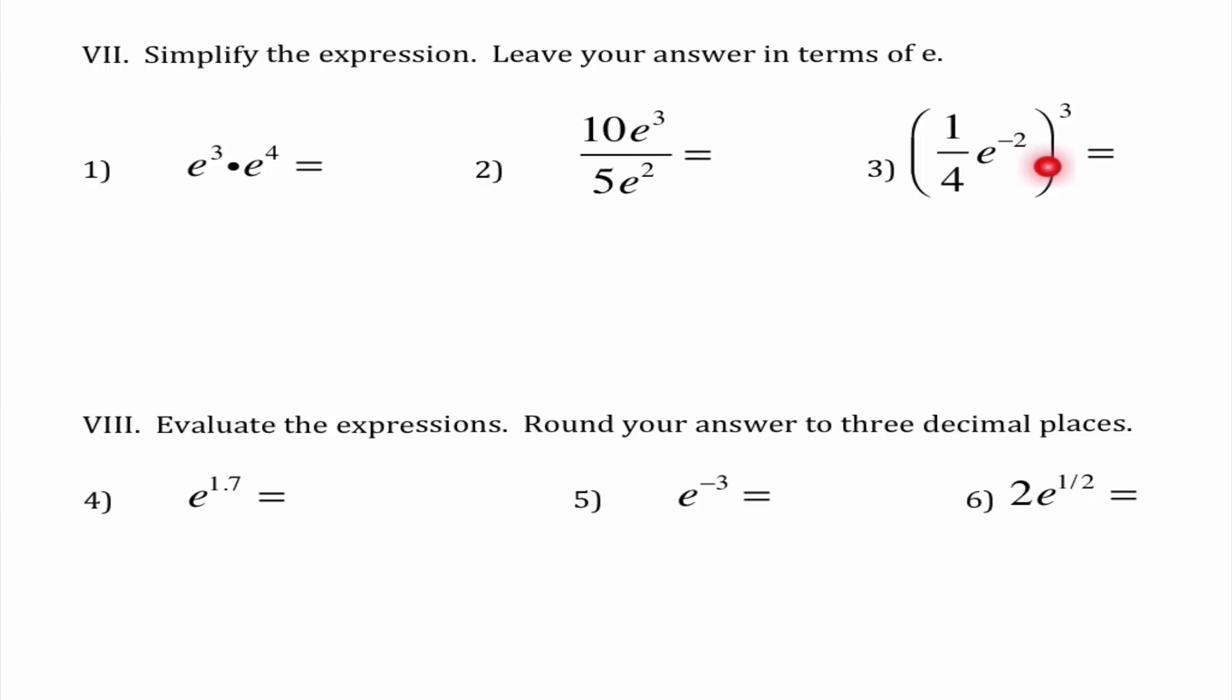And so we're just putting those into play again. So if I have E cubed times E to the fourth, I know that since I'm multiplying things that have the same power, I need to add them together. So my answer would be E to the seventh power. The directions tell us to leave our answer in terms of E. So that's what we did. Number two, first thing I would do, I would simplify this 10 divided by 5 and get 2.